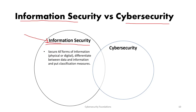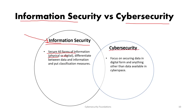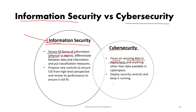In information security, we care about securing all forms of information — physical or digital. In cyber security, we focus on securing data that is in digital form only. In information security, we care about confidentiality, integrity, and availability for all elements related to information.